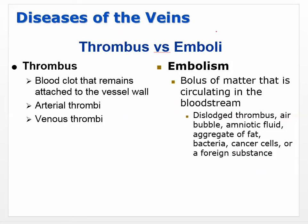Let's talk about some diseases of veins. A thrombus is essentially a clot — because thrombocytes are platelets — a blood clot that remains attached to the vessel wall. It can grow and cause restriction of blood flow, or ischemia, and can occur in arteries or veins. An embolism is different: that would be as though the thrombus broke free and caused a clot or clog somewhere else.